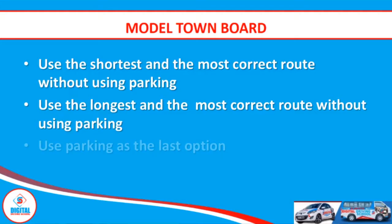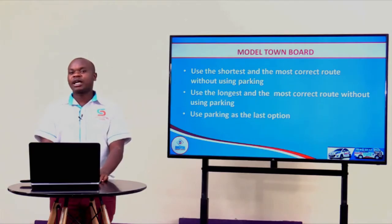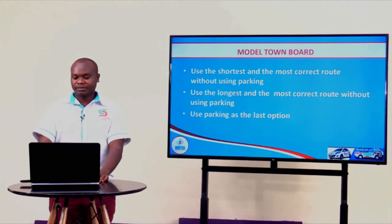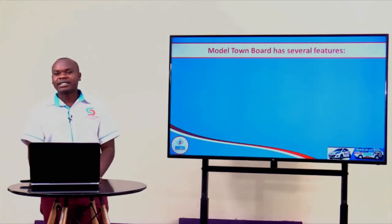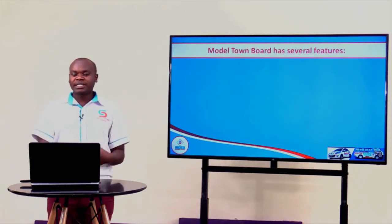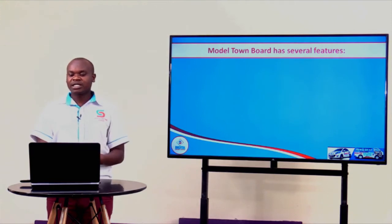And lastly, parking should be your last option. That is our third rule. Next we are going to look at what makes up, what composes this model town board. These are the features that make up this model town board. We have around 11 features and we are going to look at them one by one.